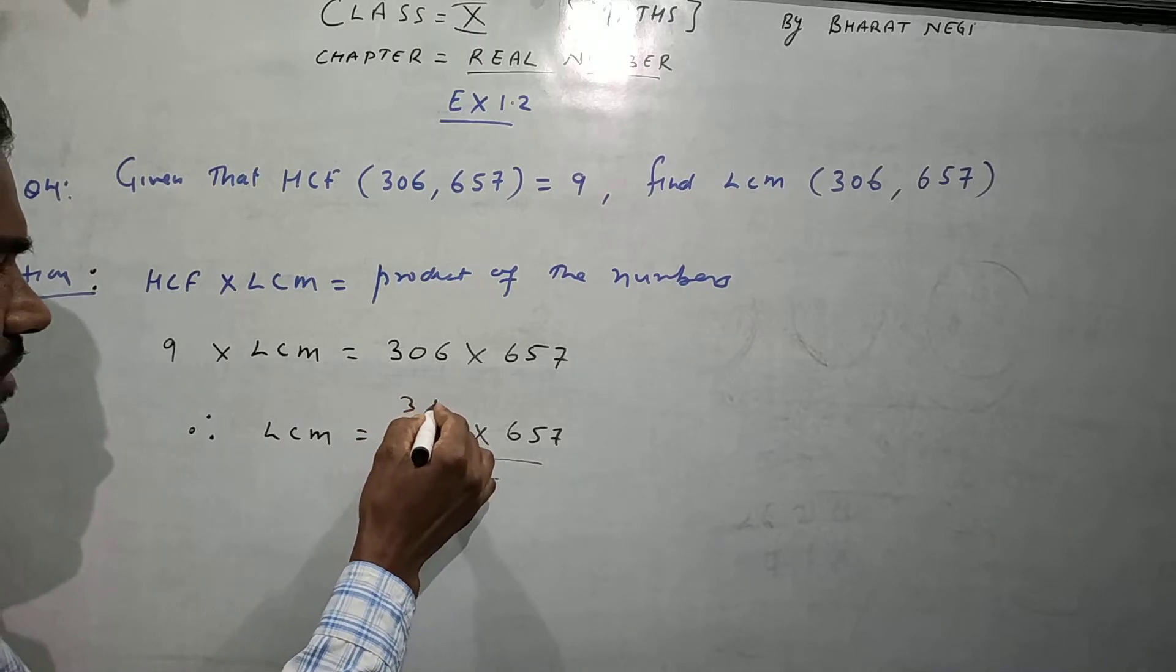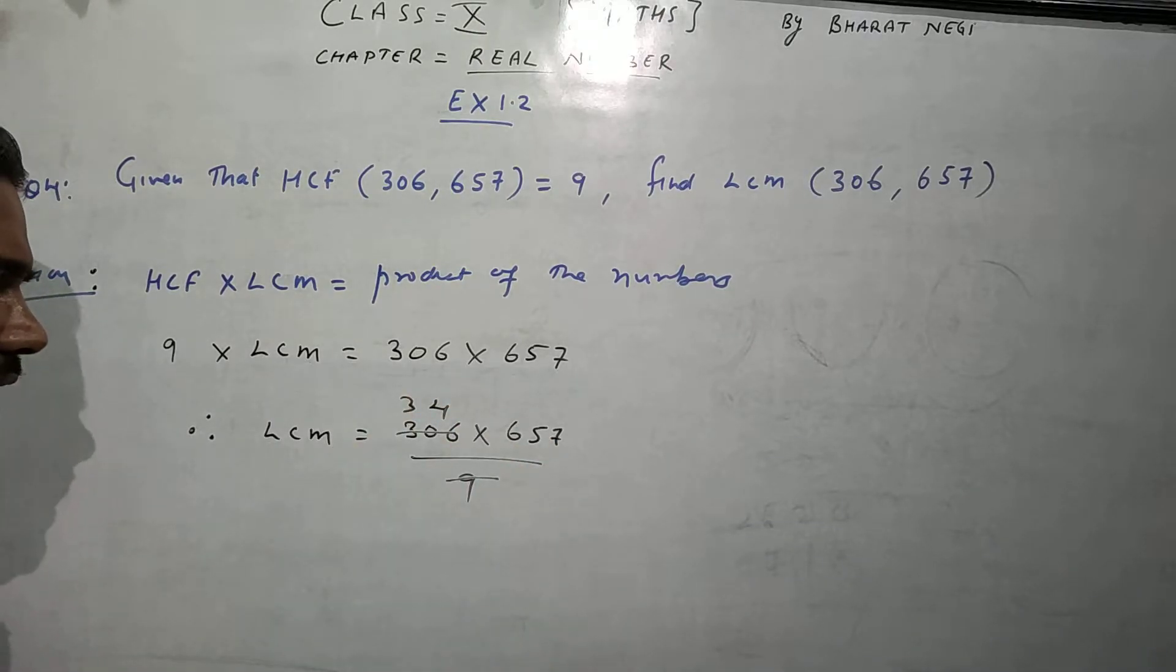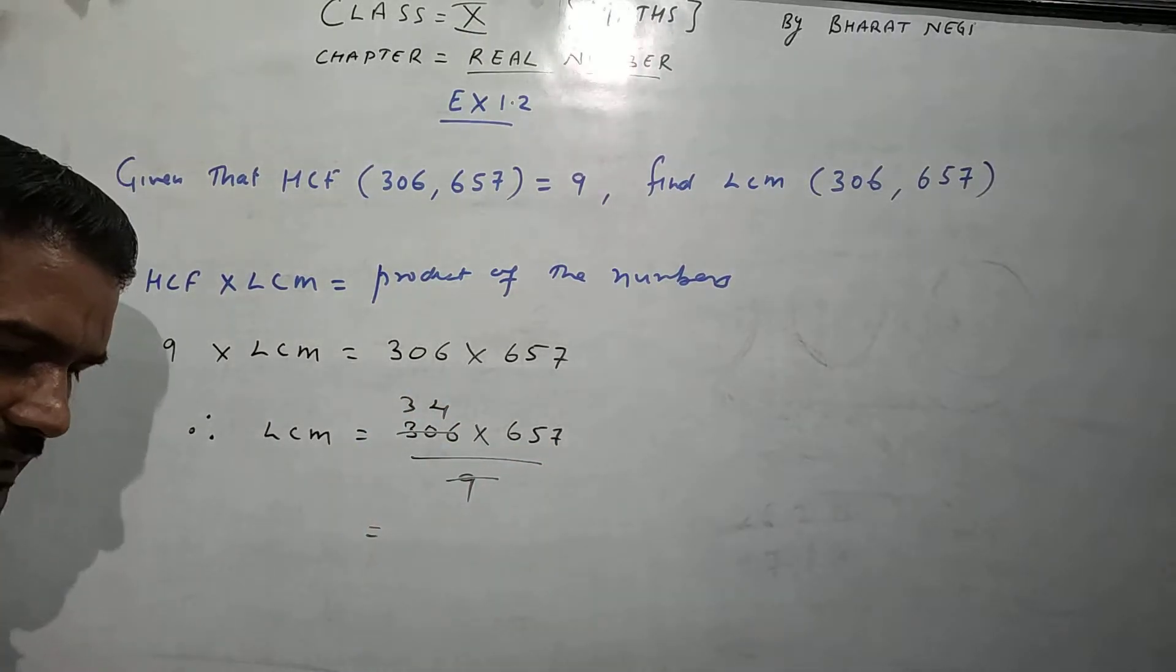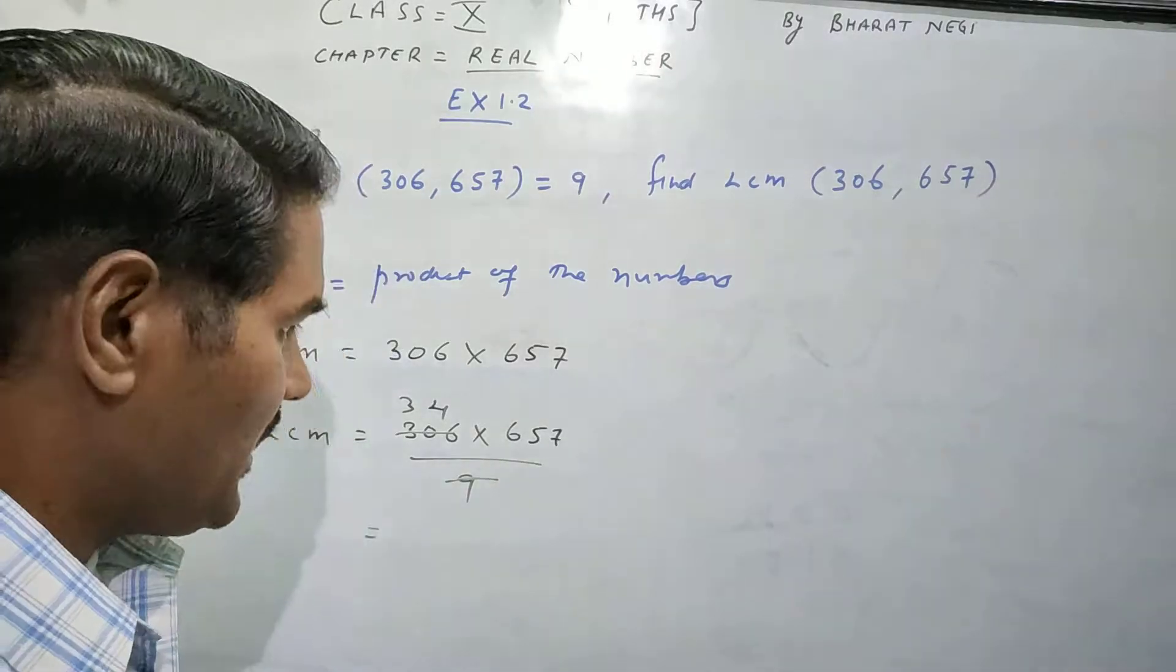Okay, 34... 306 divided by 9 is 34. Now, we will multiply this number and get our answer. So, now we will multiply.